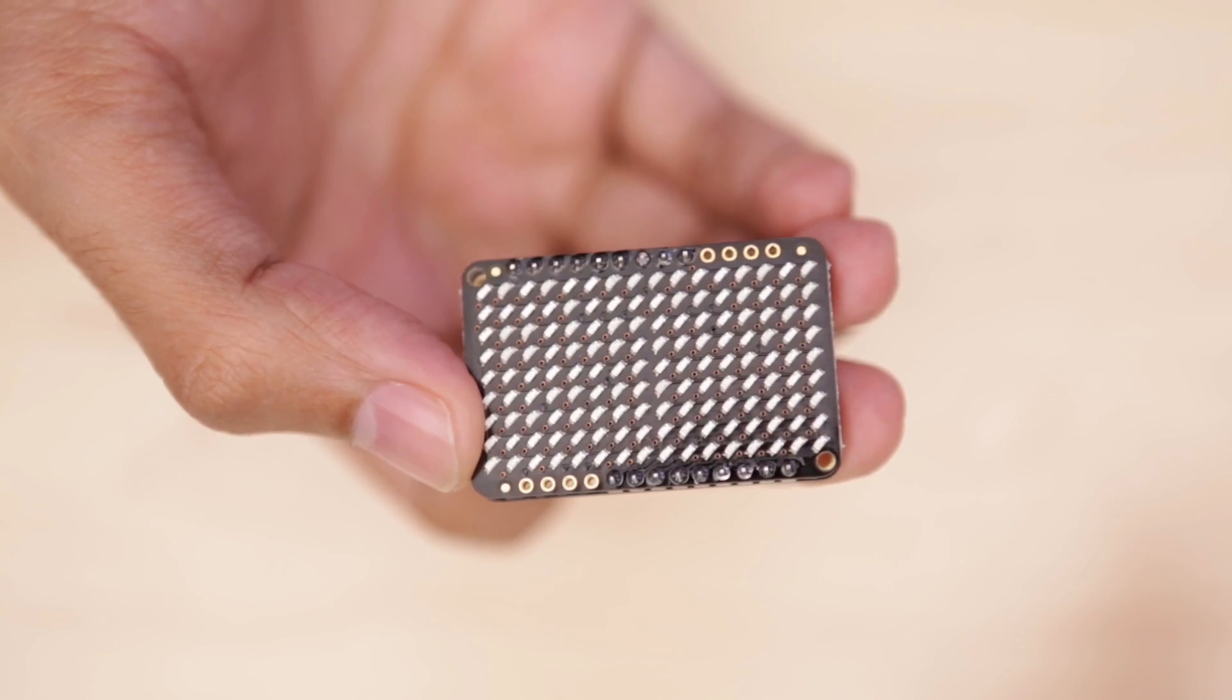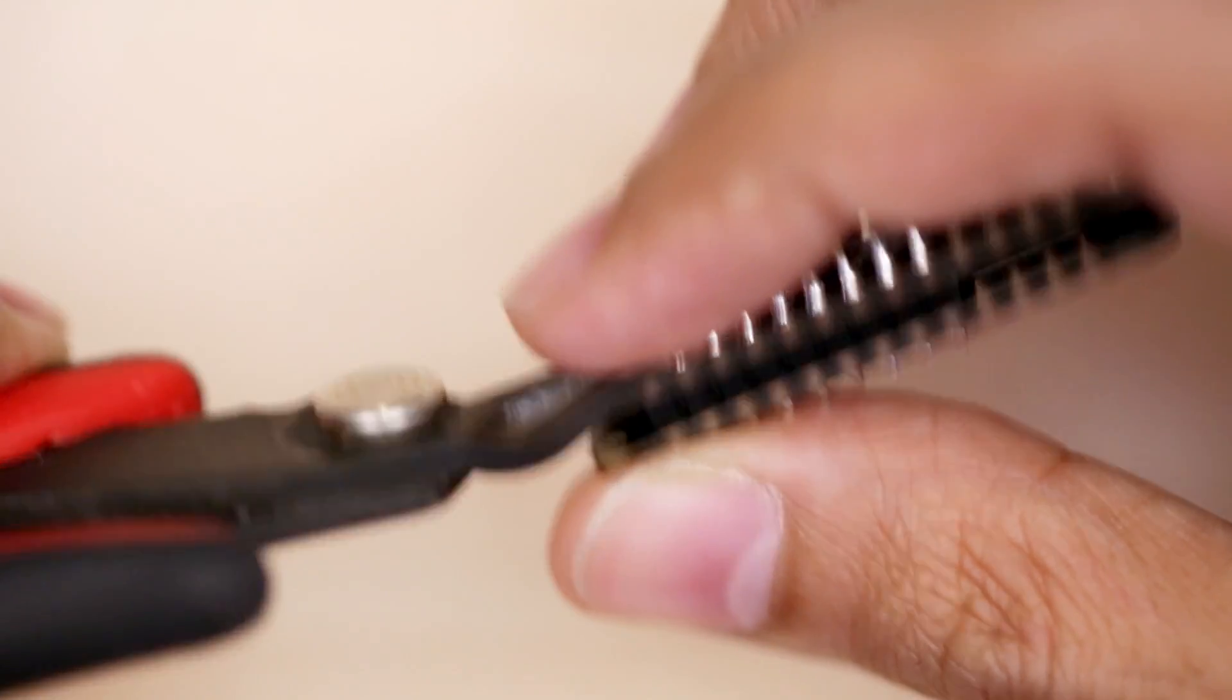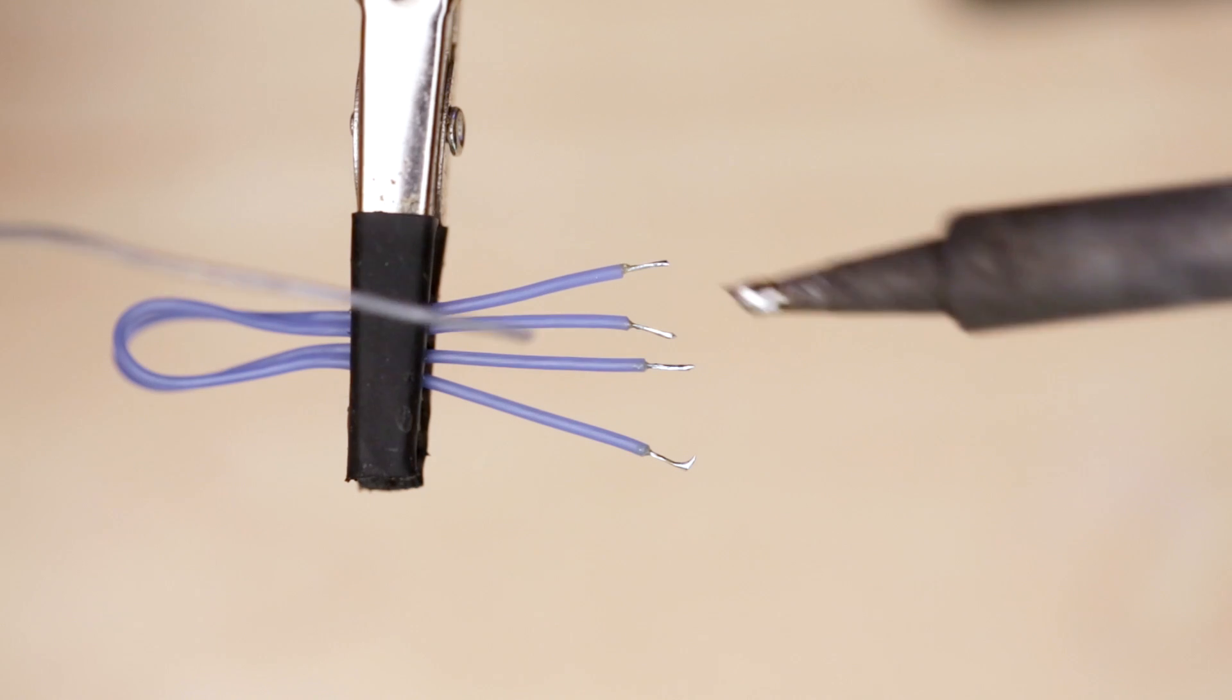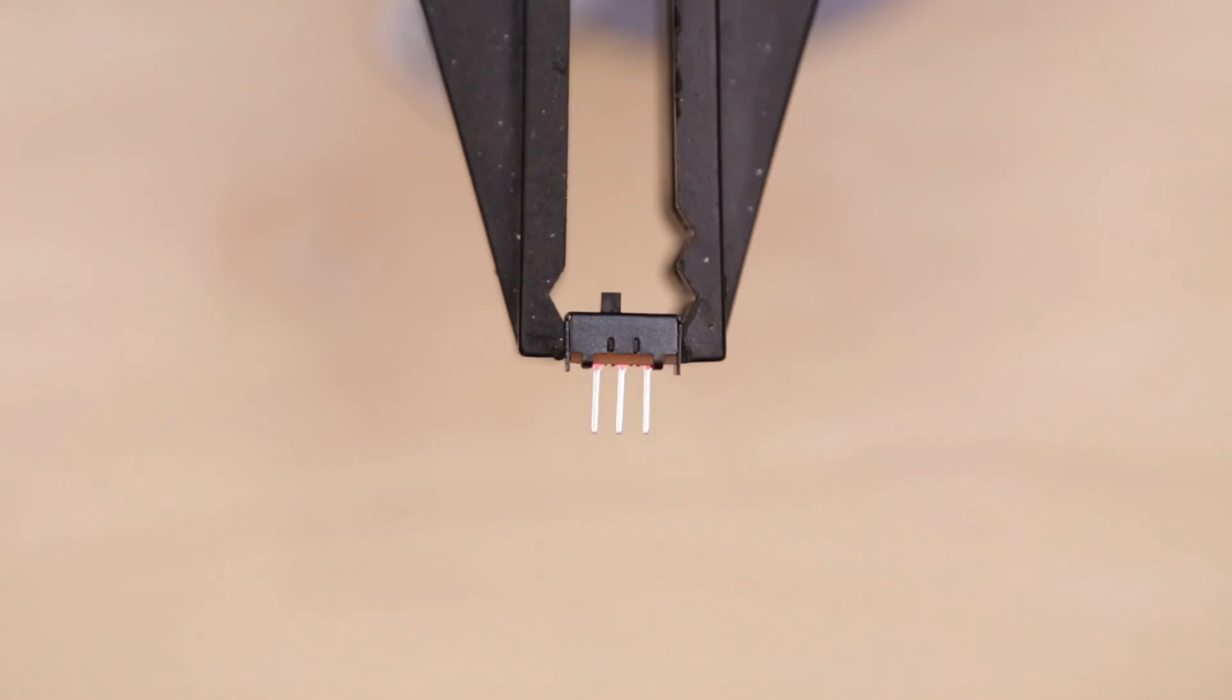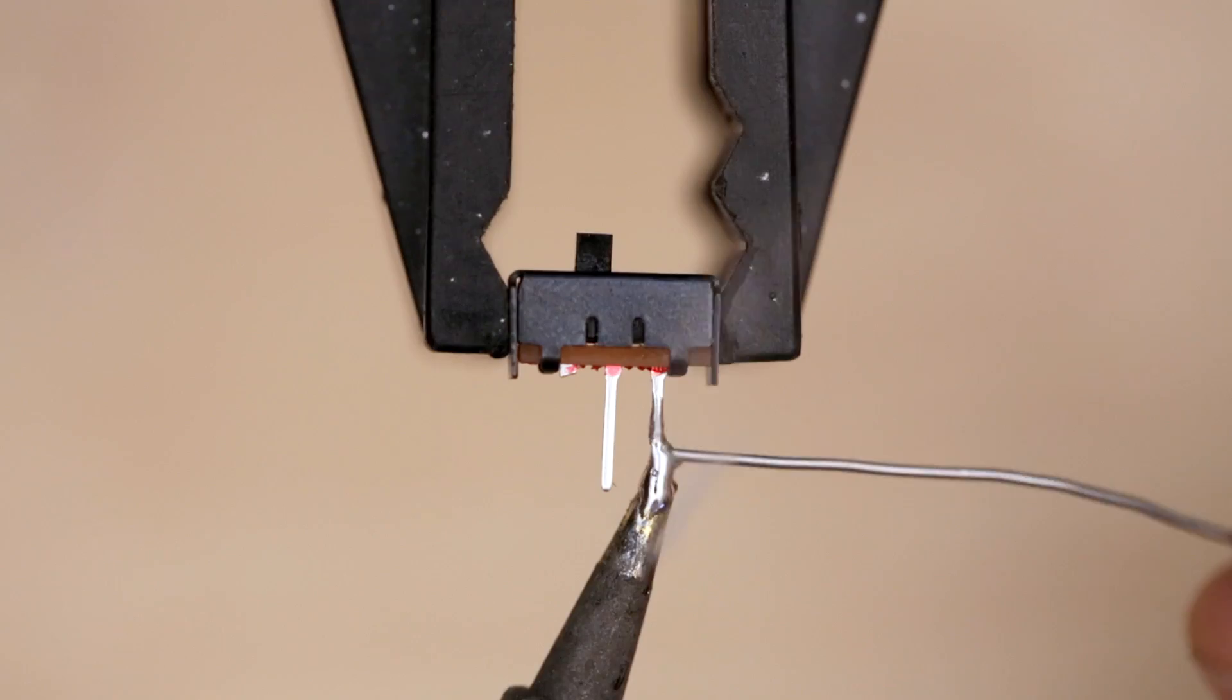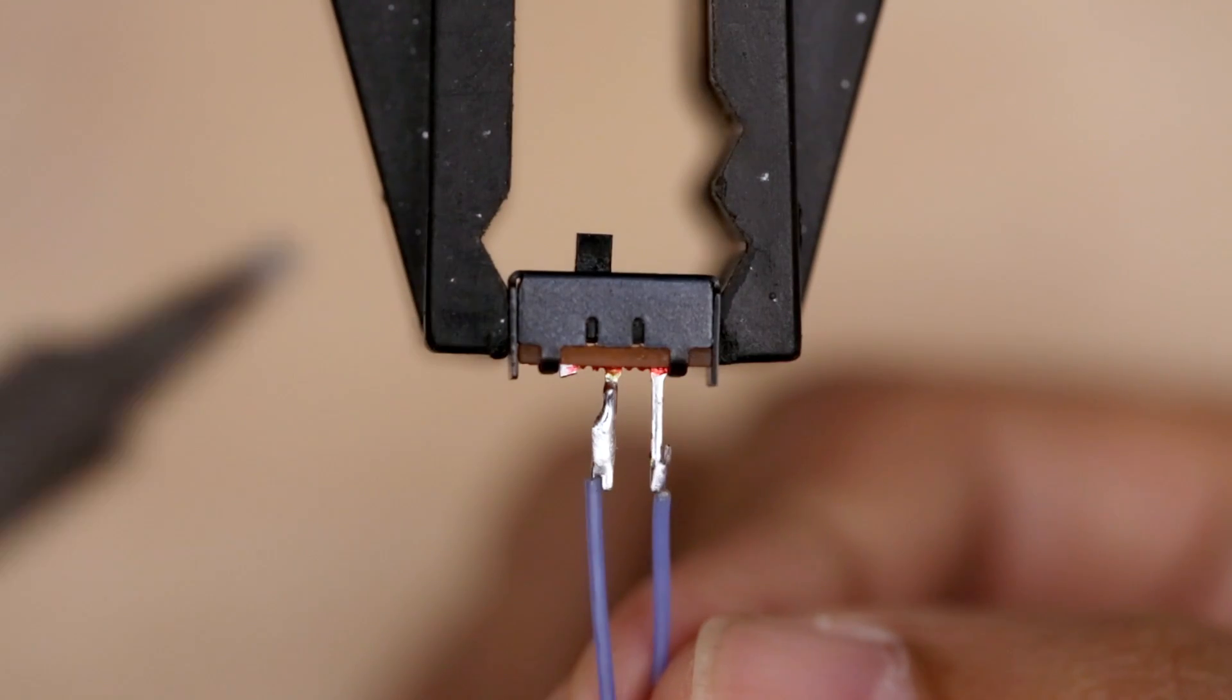Here's a pro tip: place the tip of your finger over the excess pins while clipping them short to avoid projectiles. Next we'll need two pieces of wire to connect the side switch so we can power the circuit on and off. We'll only need two leads from the side switch. Then we'll tin the leads and connect the two wires.